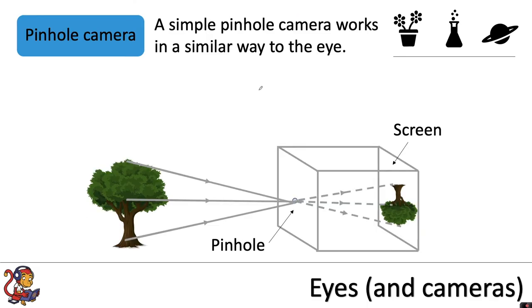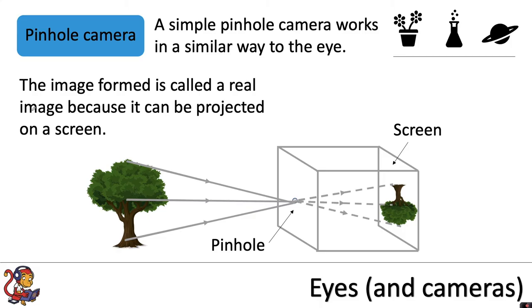A simple pinhole camera works in a similar way to the eye. The image formed is called a real image because it can be projected on a screen. So here we've got our camera with a small pinhole at one end and our screen at the other end. You can see that image is projected onto the screen.